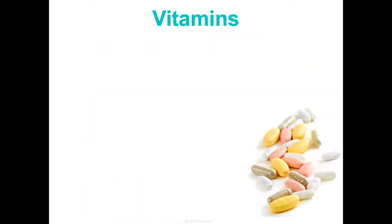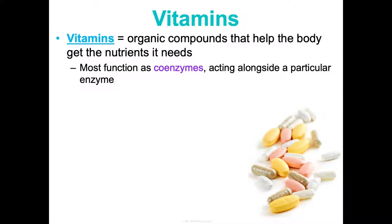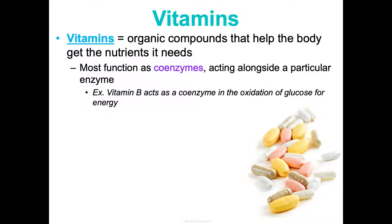Now for micronutrients, which may be newer content. Vitamins are organic compounds that help the body get the nutrients it needs. Most function as coenzymes — we're not using them for energy or as building blocks directly, but they play a critical role in allowing us to use other compounds for energy and building. For example, vitamin B acts as a coenzyme in the oxidation of glucose for energy.